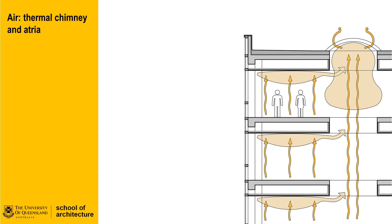Applied to a whole building, the use of atria and chimneys can further induce the flow of air upwards through natural buoyancy. The flow of hot air upwards can have the effect of inducing air flow from below, so that if air coming in from below is cooler, we can have an effect where the flow or breeze can be induced without excessive external pressure.